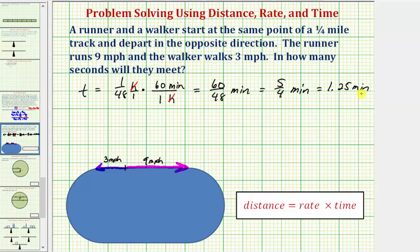But again, we want the time in seconds, not in minutes. So now we'll convert the time of five-fourths, or one point two five minutes, to seconds. So as a fraction, we'd have a denominator of one.